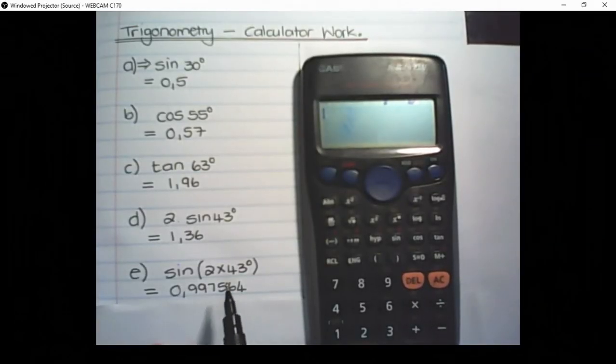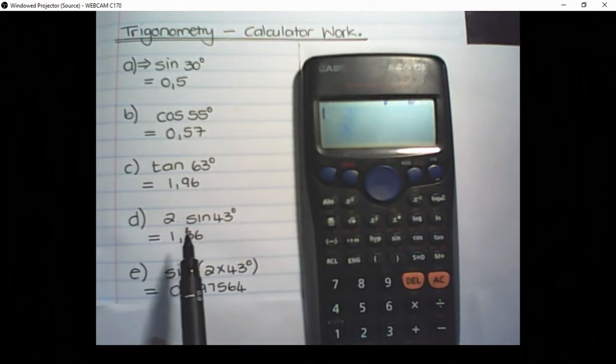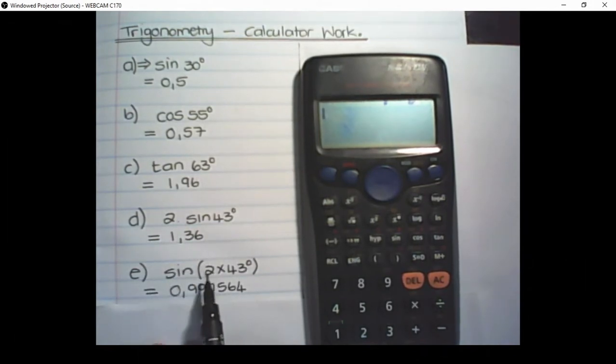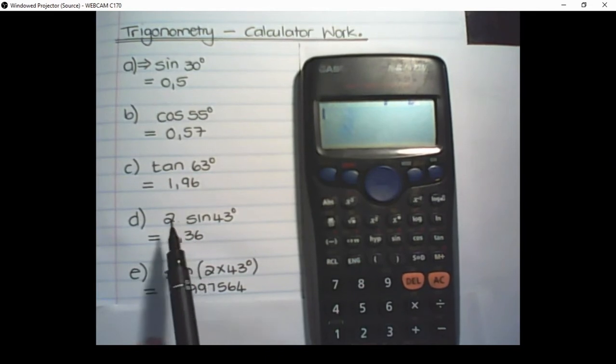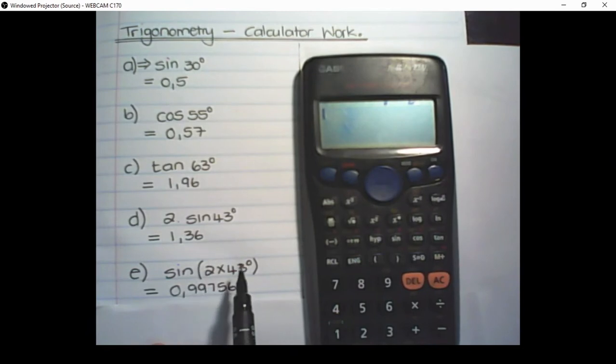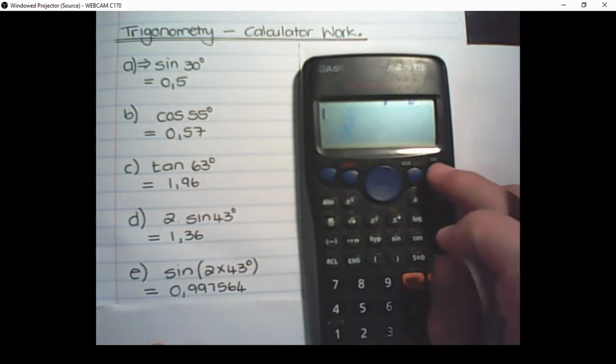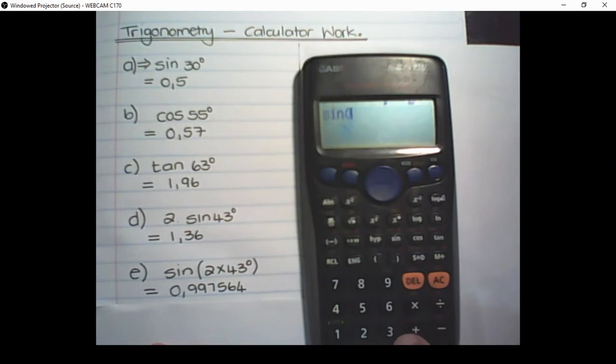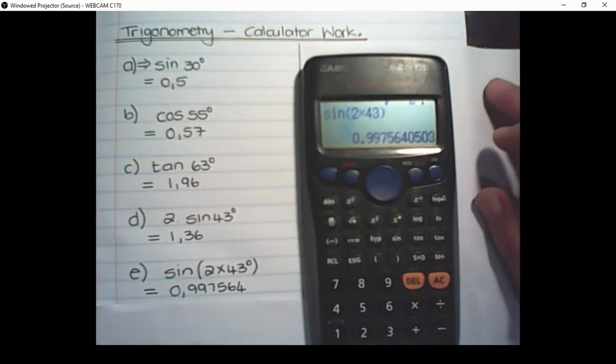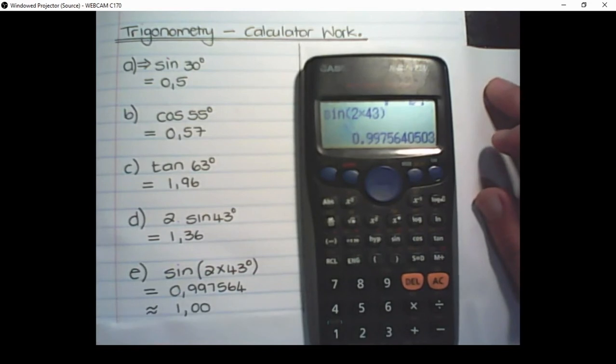The next one looks similar to the previous one but notice the 2 is not in front of sine but the 2 is after sine. That means we're not multiplying sine 43 with 2. We're rather multiplying the angle with 2. So on our calculator we'll say sine and then 2 times 43. Close the bracket. That is equal to 0.99756. But rounding off to 2 decimal places that becomes 1.